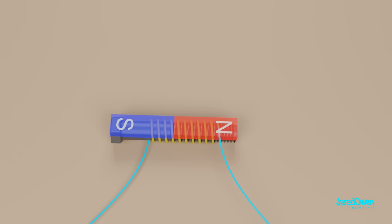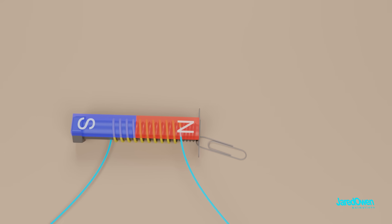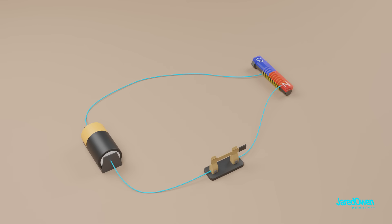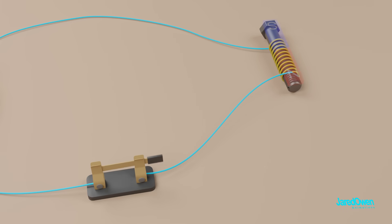It can do the same things that a permanent magnet can. It can pick up pieces of metal, and it has a north and a south pole which will attract or repel other magnets. But the electromagnet is special in the sense that it can be turned on or off, just like the light bulb. You can't do that with a permanent magnet.